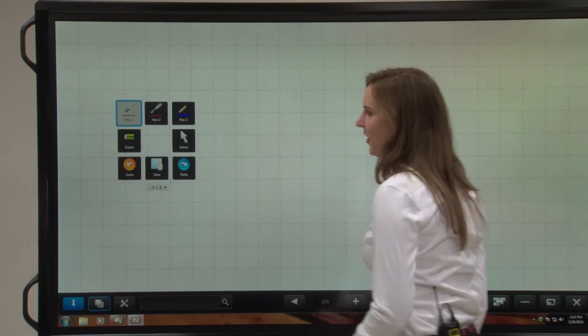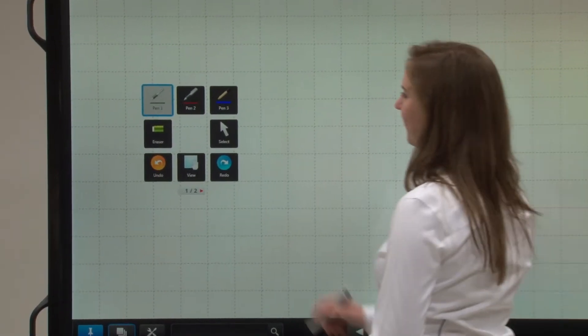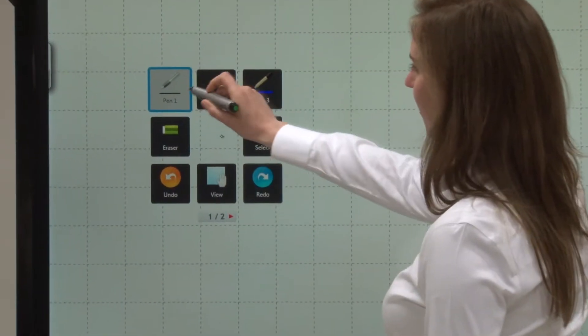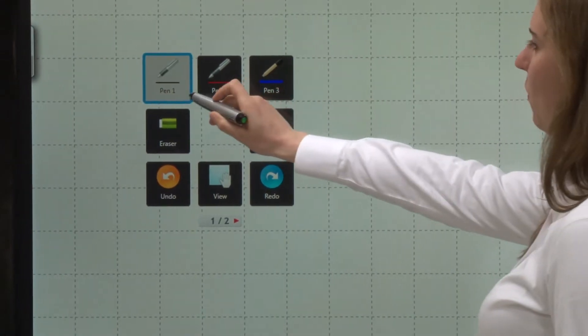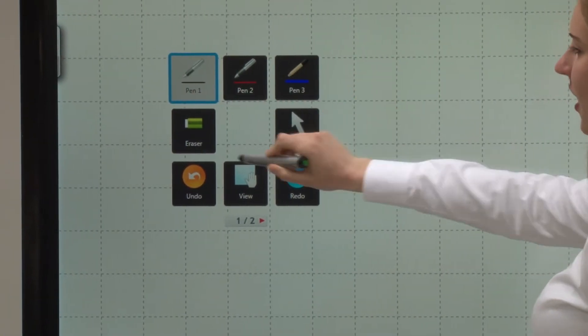On the left part of the screen you'll see the square menu. Today we'll be using the first three buttons on the top, Pen 1, 2, and 3, and the eraser.